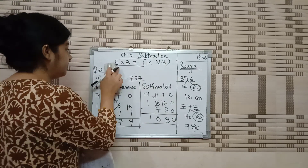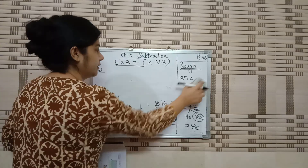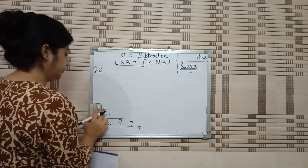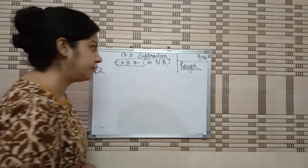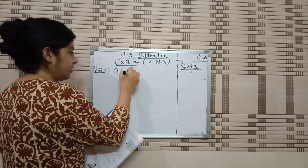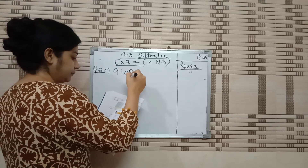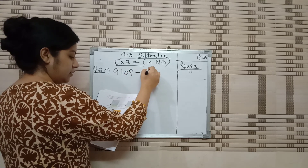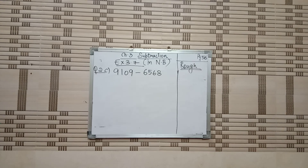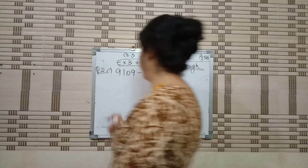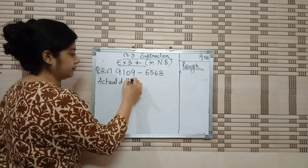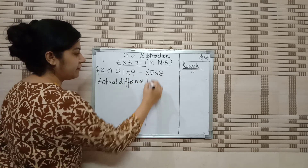We will do question number 2, part C also, because both numbers are 4 digits, so let's do it once. Part C: 9109 minus 6568. It's a simple round off to the nearest tens, as we have learnt in our previous chapters. First we have to find the actual difference, and then we have to find the estimated difference.